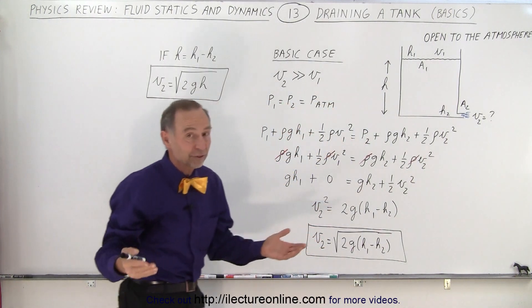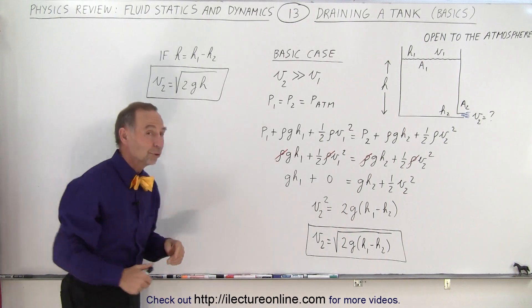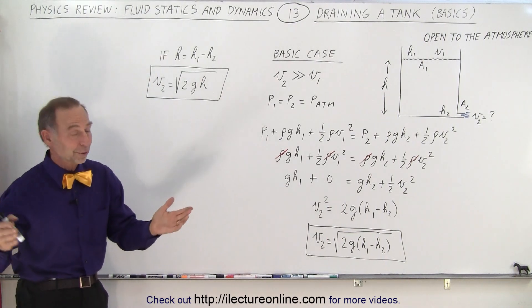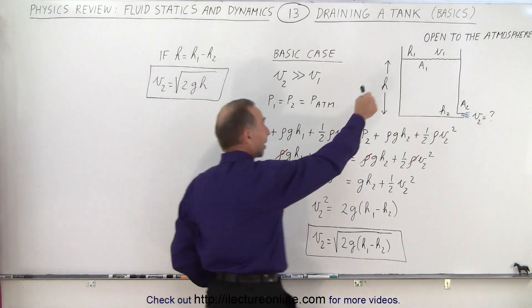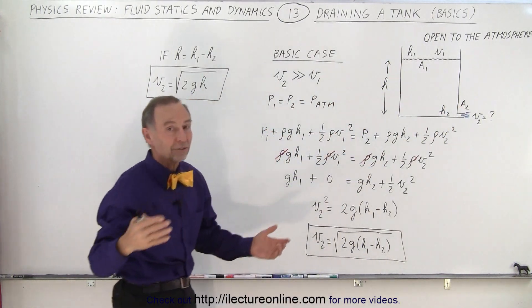Now if we call that difference simply equal to h, then we simply can take the equation and reduce it to the square root of 2gh, which by now you should be familiar with, that's the speed of an object dropped from this height, when it reaches the bottom it would have that speed.